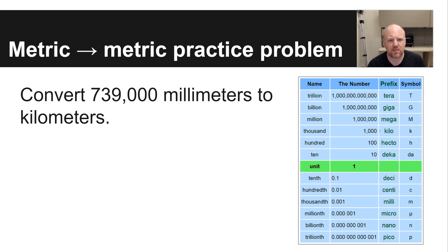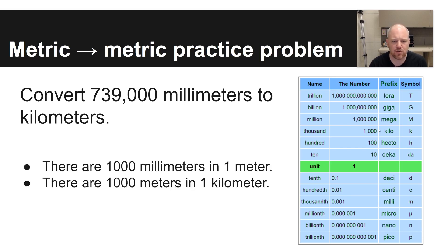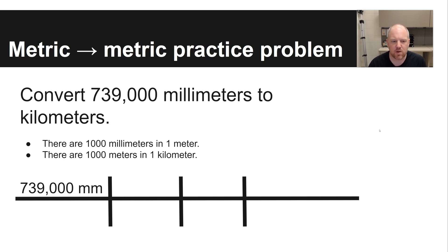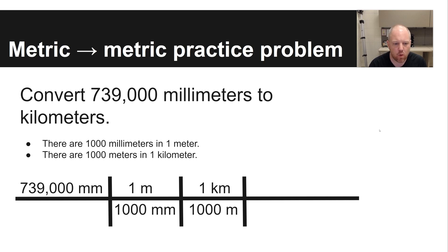Here's an example problem for metric-to-metric conversion: convert 739,000 millimeters to kilometers. You can use your prior knowledge that there are 1,000 millimeters in a meter and 1,000 meters in a kilometer. The method I like to use is the train tracks method, where you set up conversion factors within different tracks. You always start on the left-hand side with your beginning value — 739,000 millimeters — then load in the conversion factors: 1 meter per 1,000 millimeters, and 1 kilometer per 1,000 meters. The goal is to get units to cancel — one unit on the numerator and one on the denominator of each fraction.